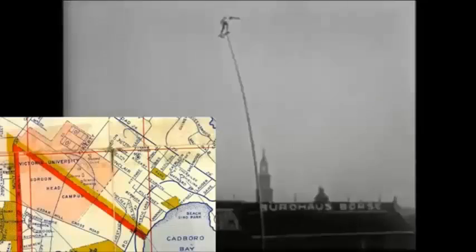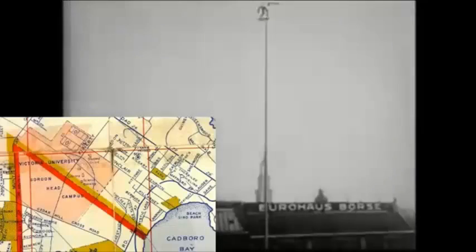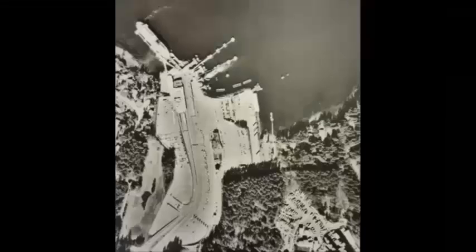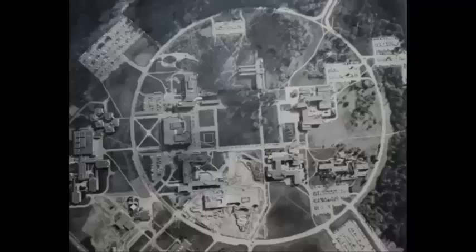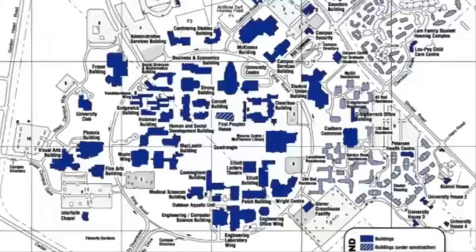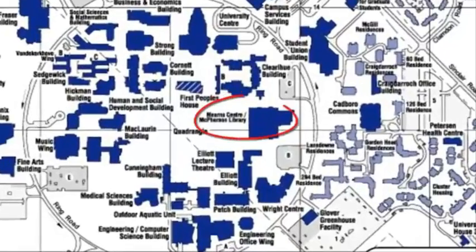Curious about which roads led to UVic 50 years ago? The simplest way is to check a road map, but I suppose this would have worked too. And if you want to travel back in time and watch the Swartz Bay Terminal grow before your eyes, or see which buildings on campus came first, the UVic Map Library has the means to make it happen.